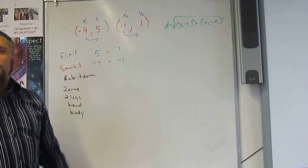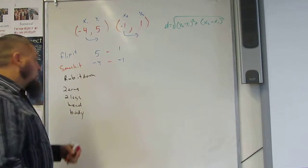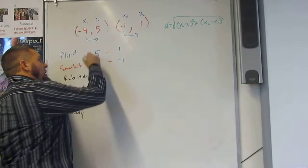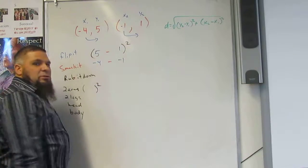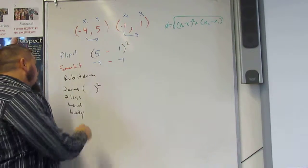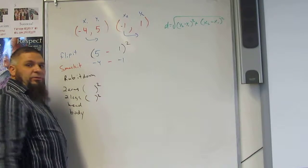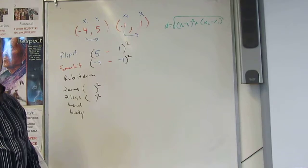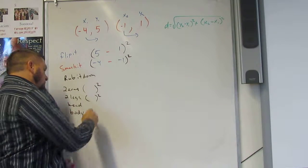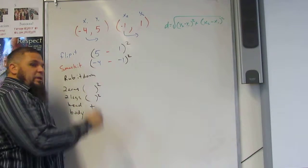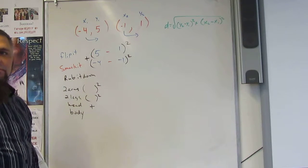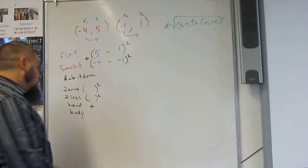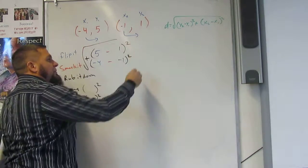Each one of these things has something tied to it. My arms, two of them. My legs, two of them. My head, one head. And my body, this big square root thing. And that's your distance formula. That's it.